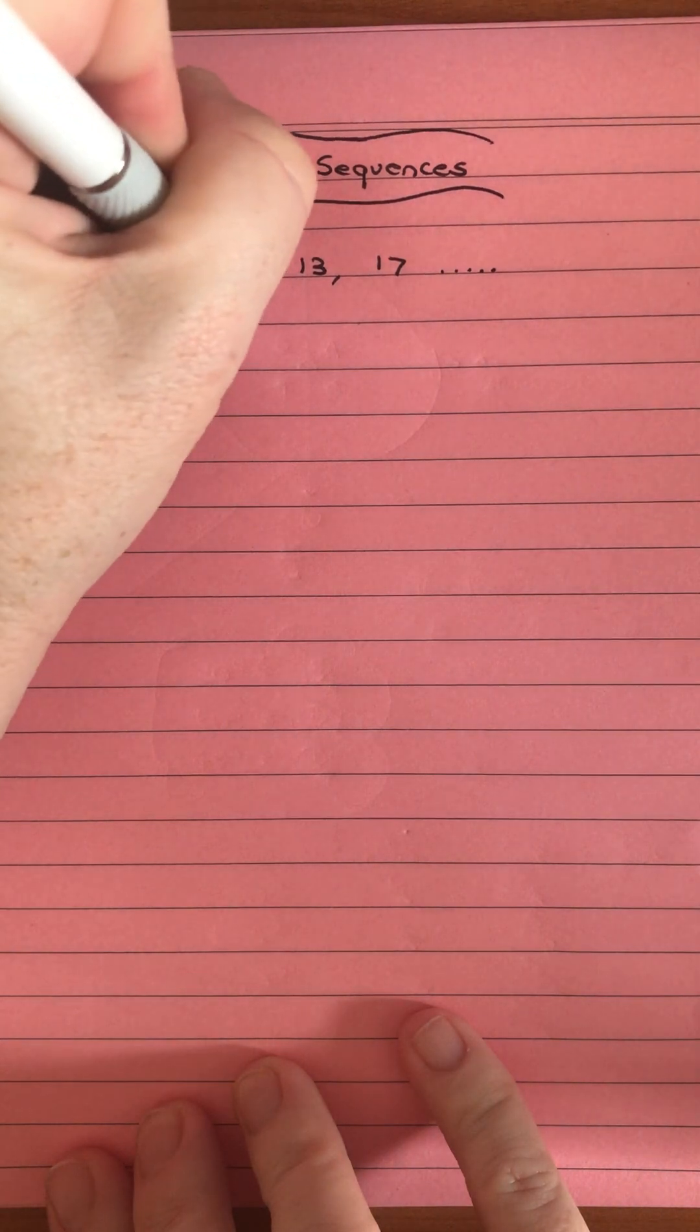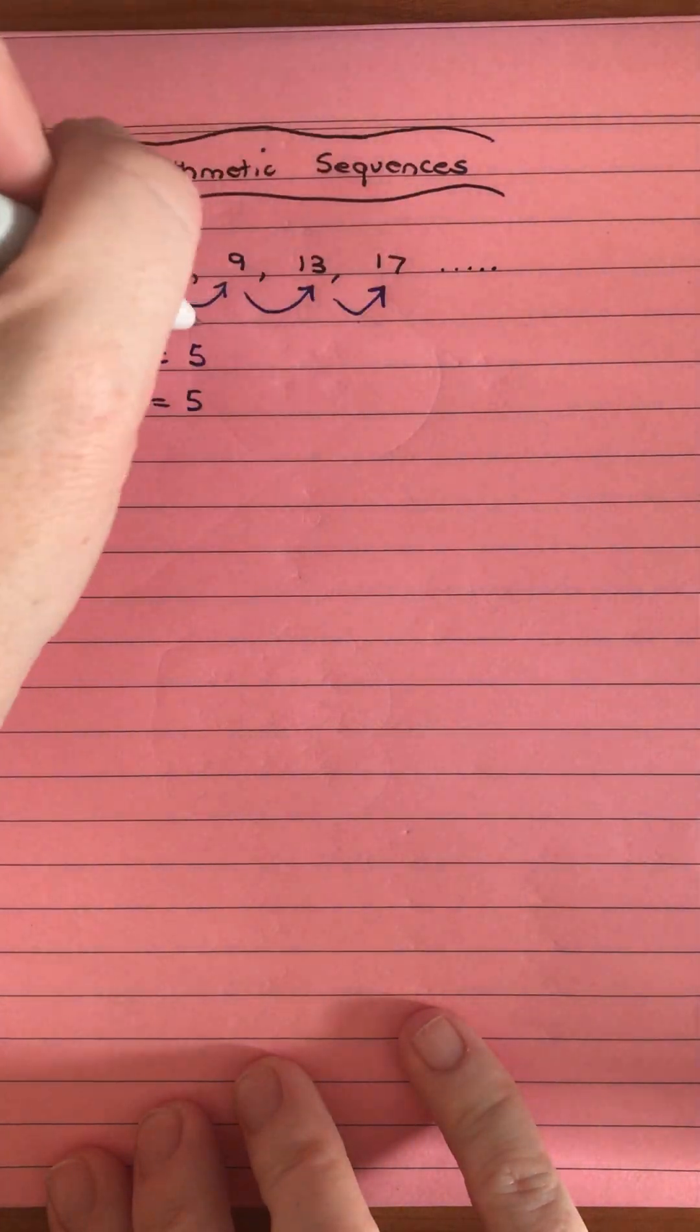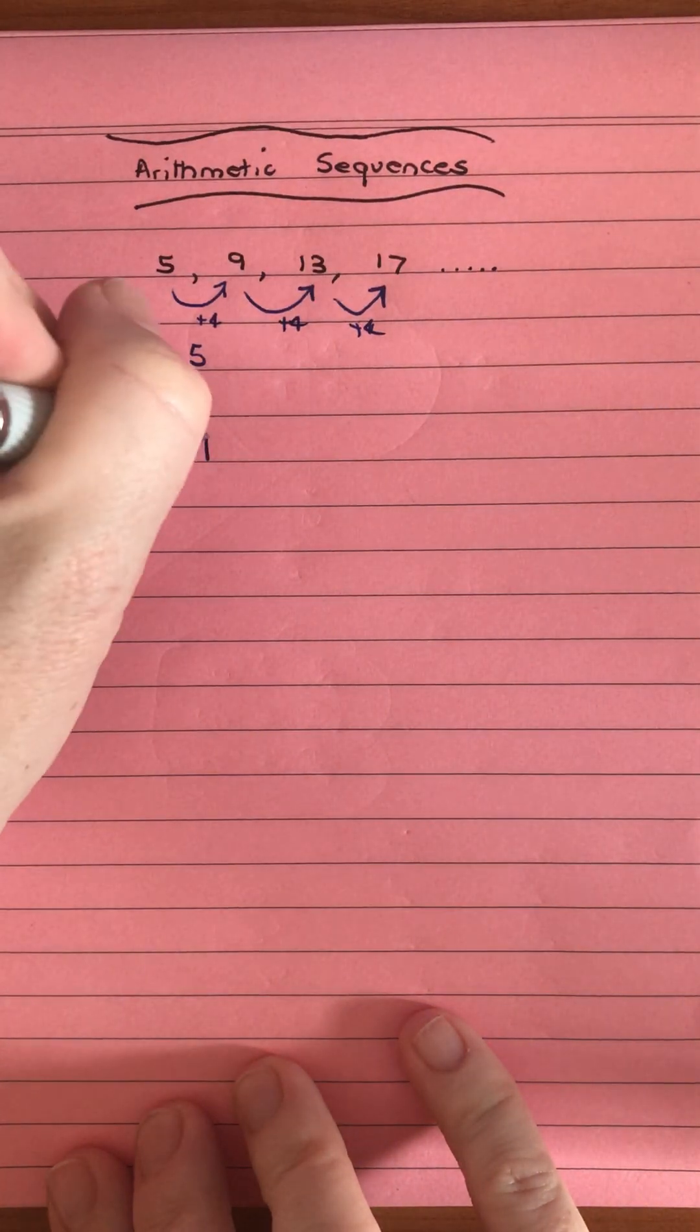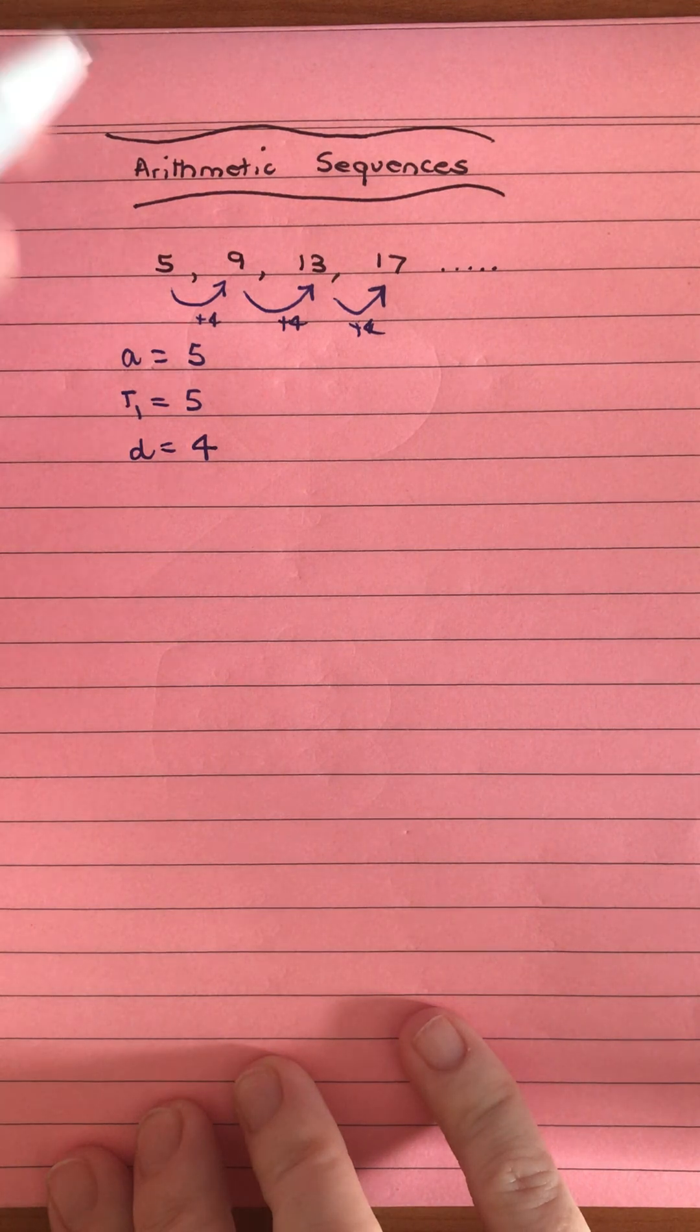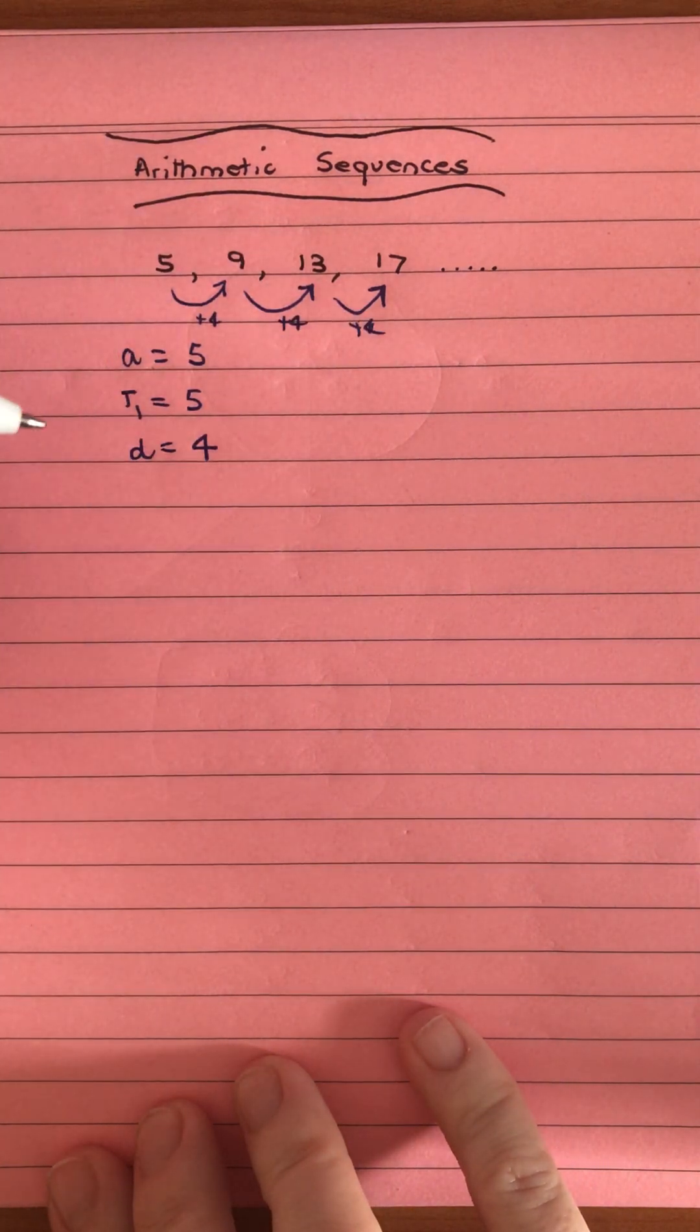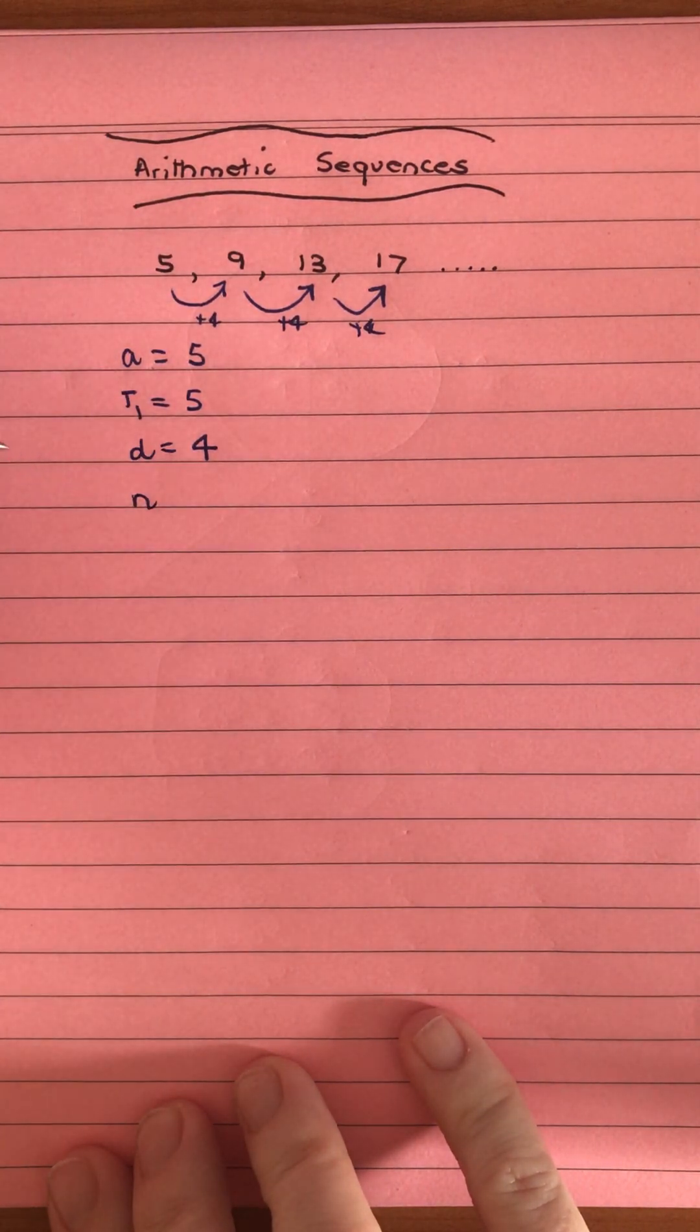We can also see what we call our common difference. So what are we going up by? We're adding 4 each time, so our difference d equals 4. We can also talk about the number of terms, which is what n equals.